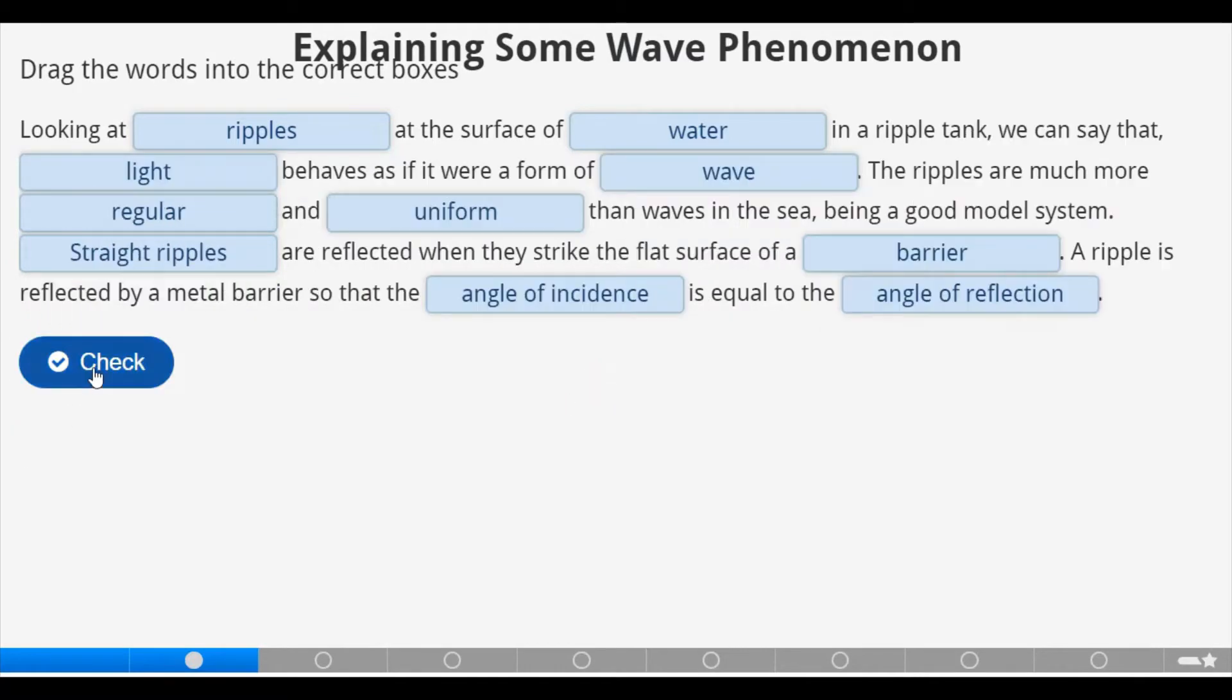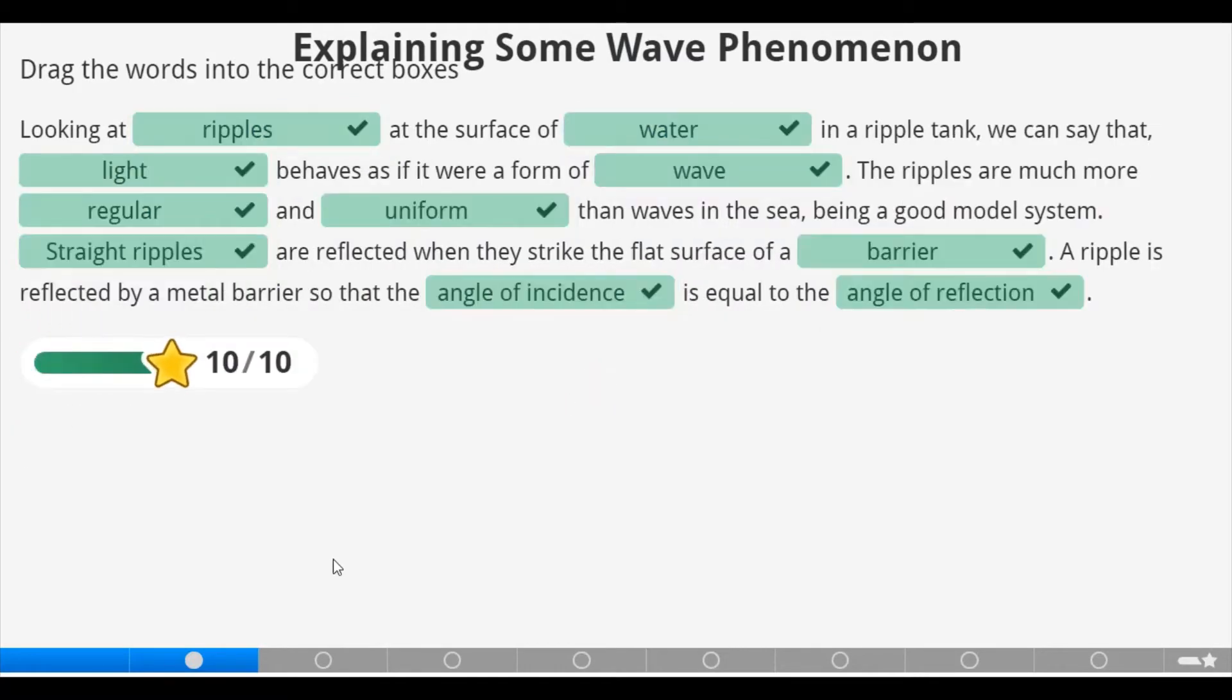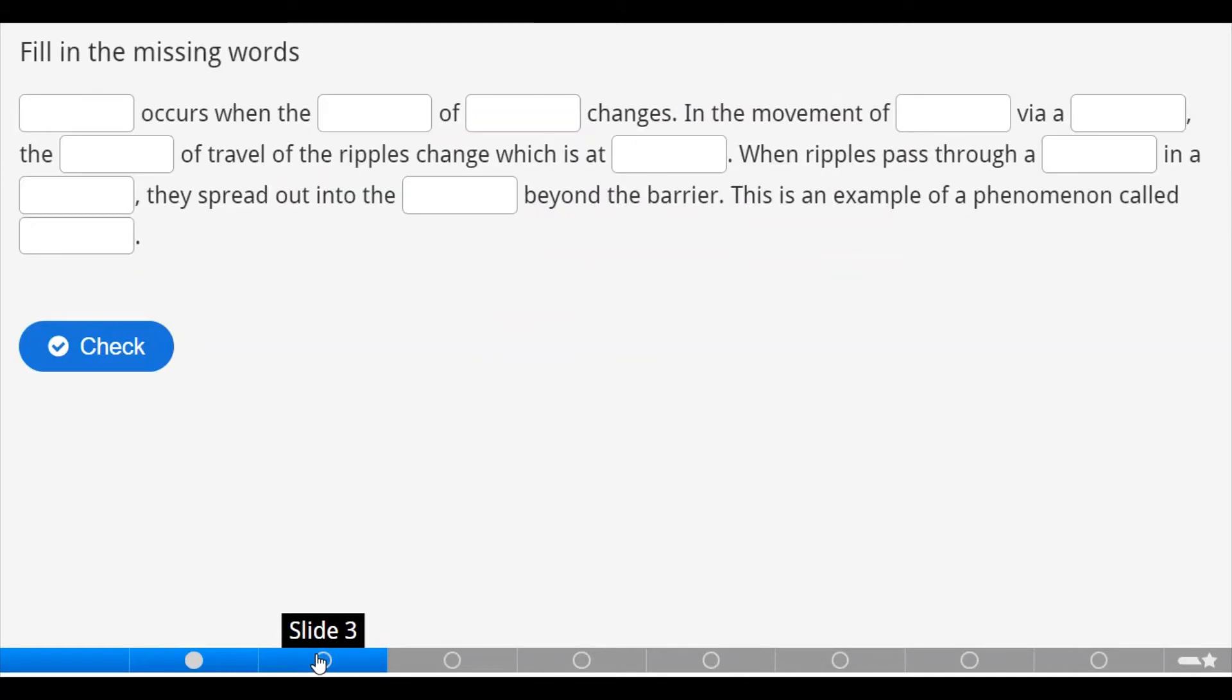A ripple is reflected by a metal barrier so that the angle of incidence is equal to the angle of reflection. Let's check. That's the power.